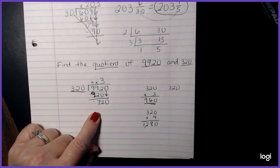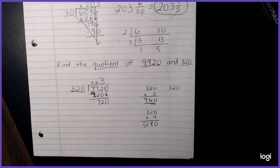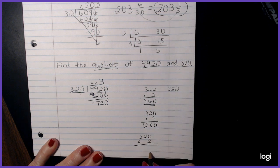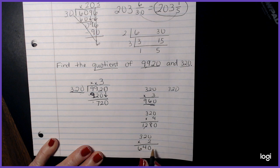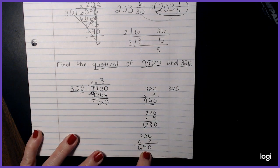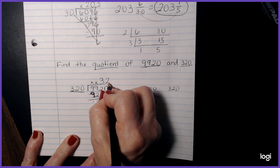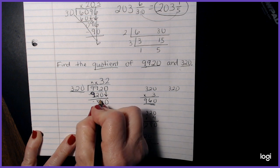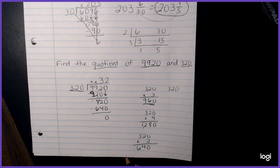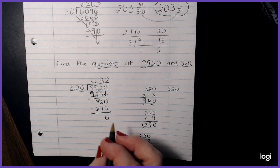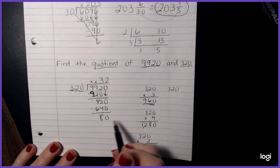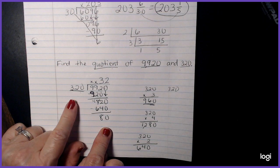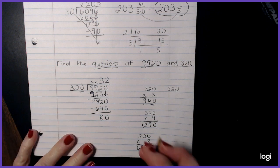320 into 720. Now, obviously less than three. So let's check what 320 times two would be. 640. That's obviously will work. So let's put a two here. 640. Subtract. And this is 680 is less than 320. So that looks pretty good. So let's go ahead and make our answer. 32 and 80 over 320.